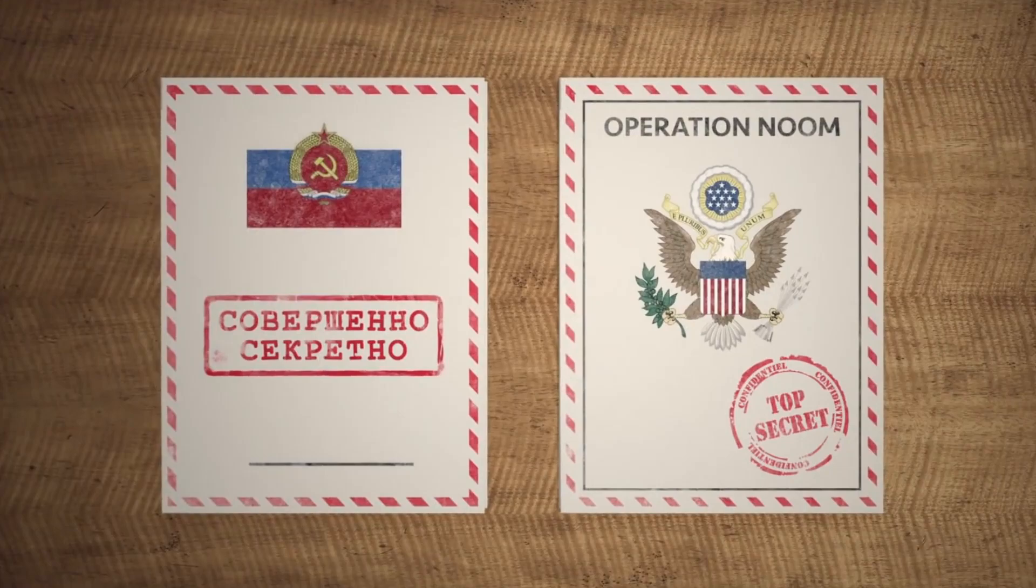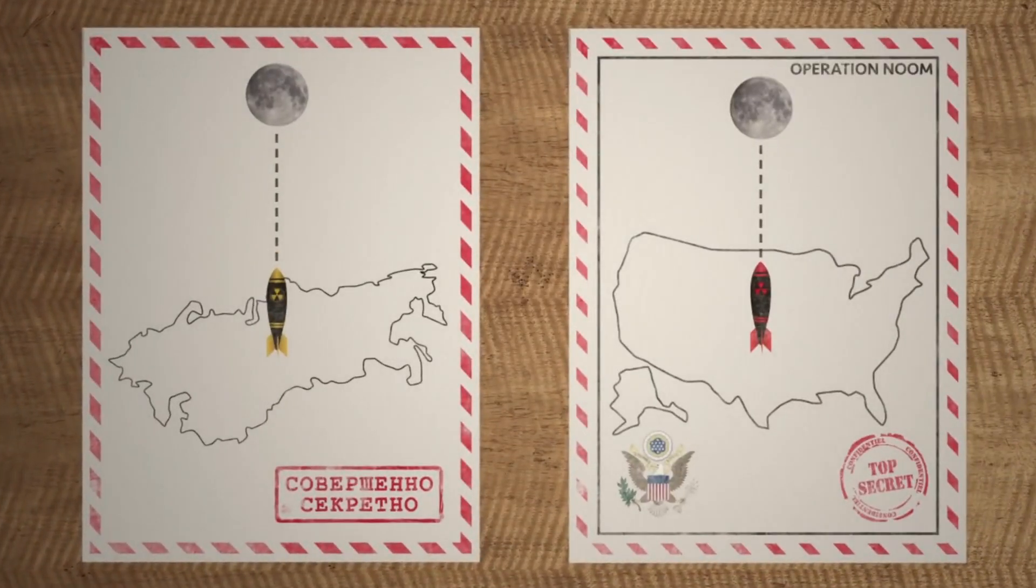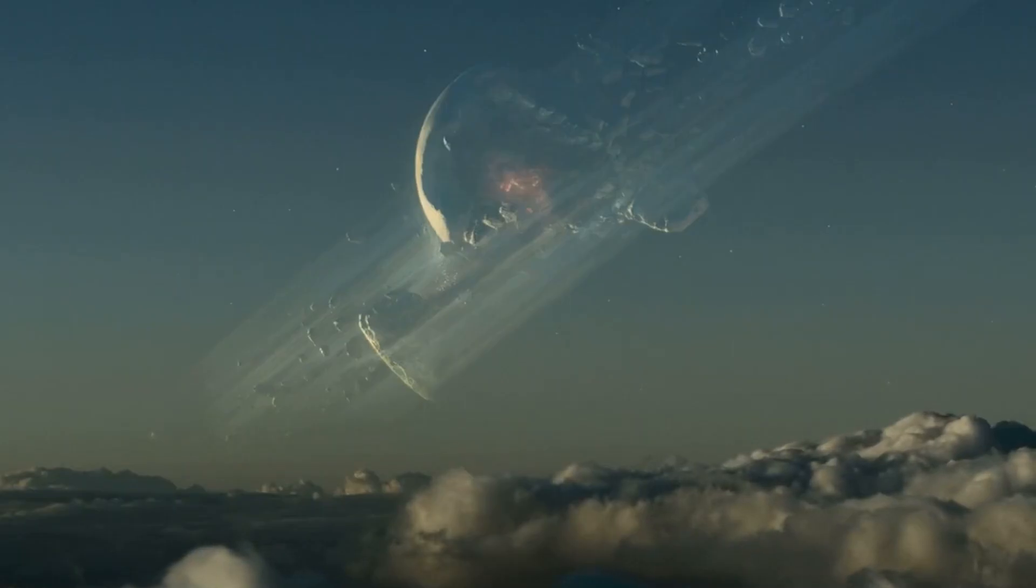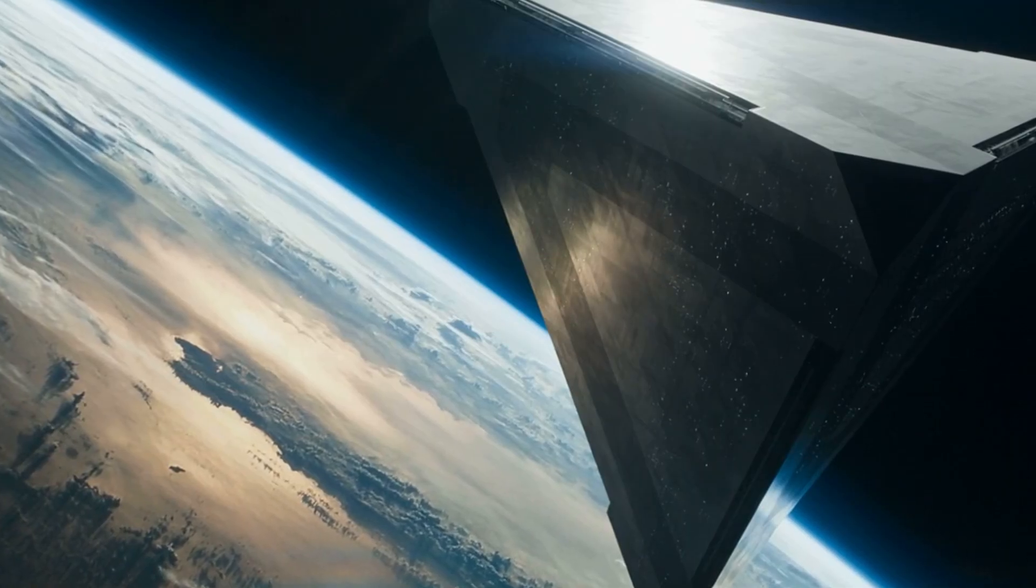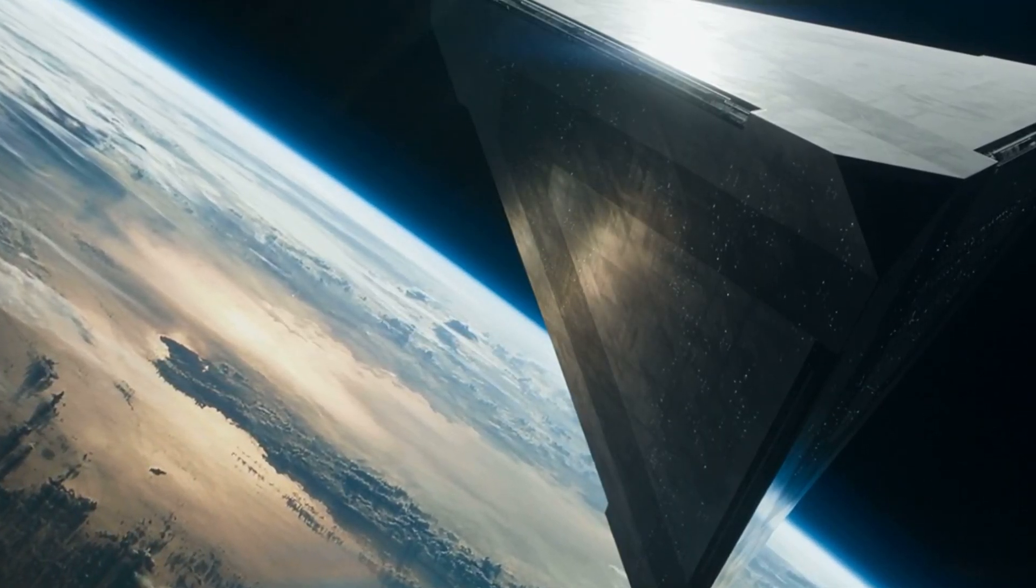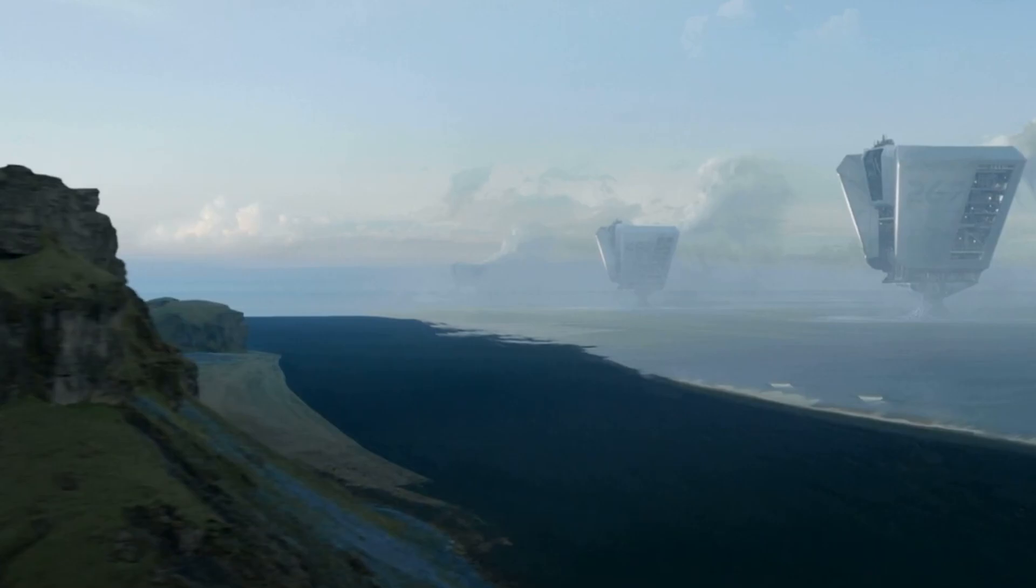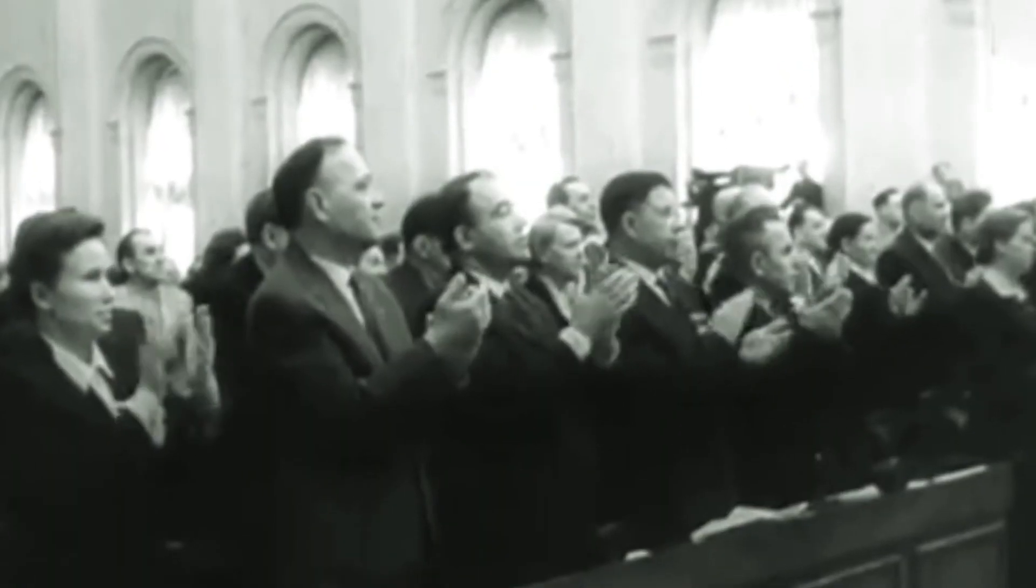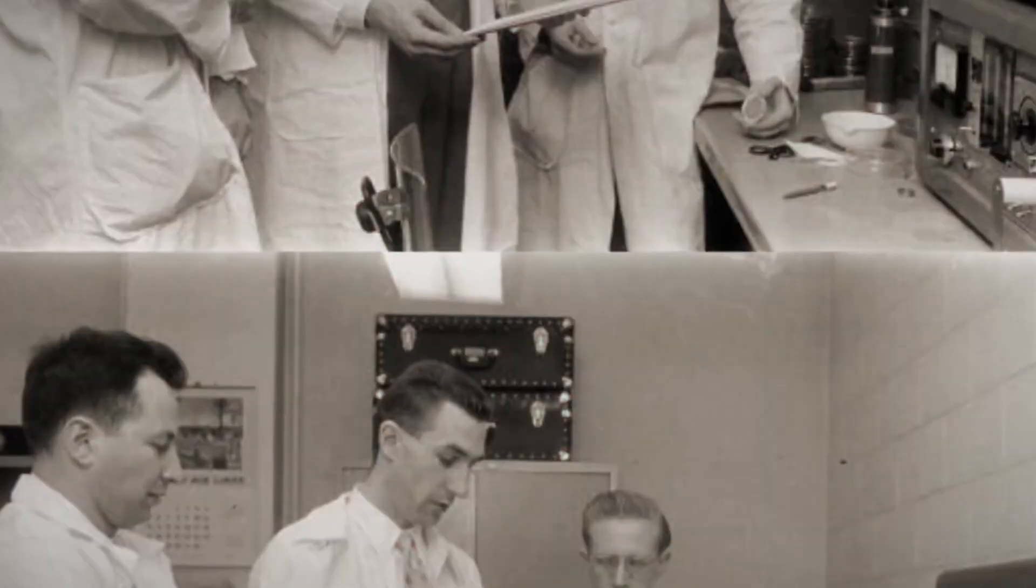The idea of detonating a nuclear bomb on the Moon might sound like science fiction, like the plot of the movie Oblivion, where aliens target the Moon as a strategy to conquer Earth. But surprisingly, during the Cold War, both the United States and the Soviet Union were seriously entertaining the idea of detonating a nuclear bomb on the Moon.